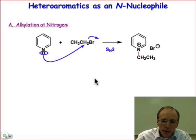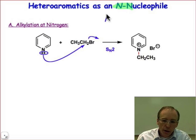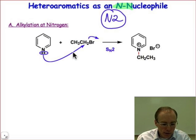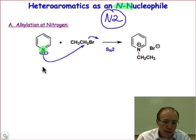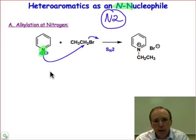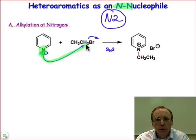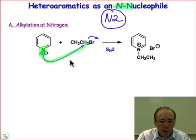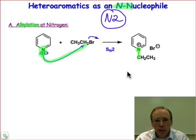The nitrogen lone pair can serve as a nucleophile, provided that we're dealing with the special type of nitrogen in a heteroaromatic — the N2 type. The N2 type of nitrogen is a nitrogen atom that has two points of connectivity to the pi system, and then it has a lone pair that's part of the sp2 hybridization. It's not involved in the pi system, and it's available to do nucleophilic attack at alkyl halides — the so-called alkylation reaction at nitrogen — where the nitrogen of the pyridine ring becomes positively charged with a new bond to carbon. We call these pyridinium, in this case pyridinium bromides.